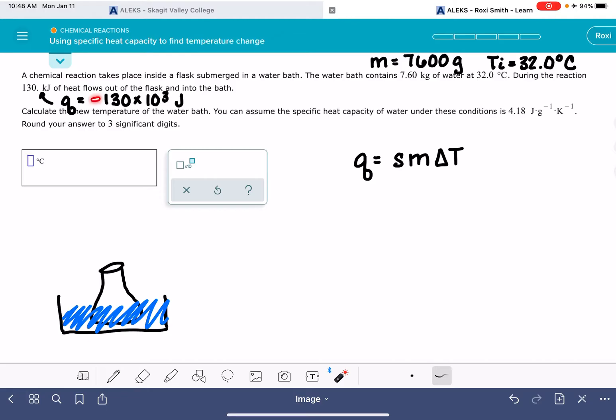Is this negative 130 kilojoules or is it positive 130 kilojoules? In order for us to determine the sign of Q, we need to think about what the problem is telling us and what that means for the water. So this is specifically saying that heat is flowing out of the flask and into the bath. That means that our heat is going in this direction right here.